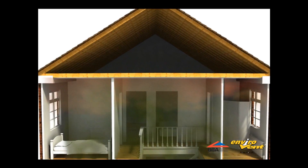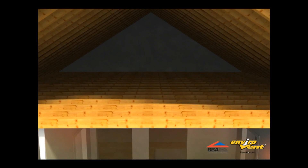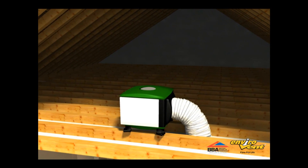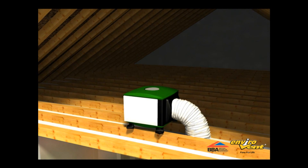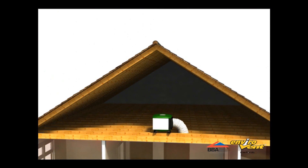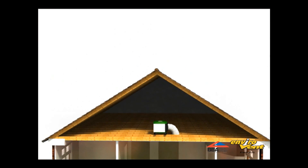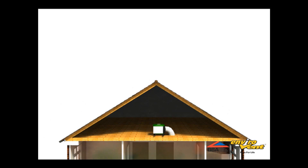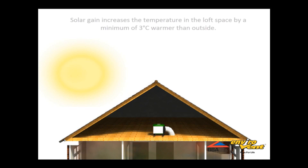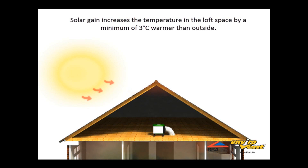The roof tiles on a house often act as solar collectors and will radiate heat into the loft space. According to a recent Energy Saving Trust report, the Good Practice Guide, the average solar gain in a loft space throughout the heating season is at least 3 degrees, resulting in over 550 kilowatts of free energy.